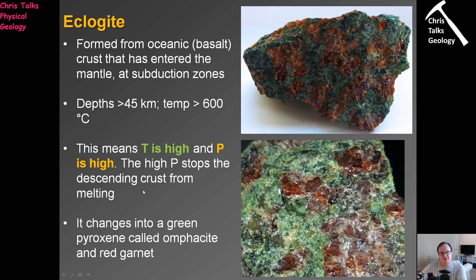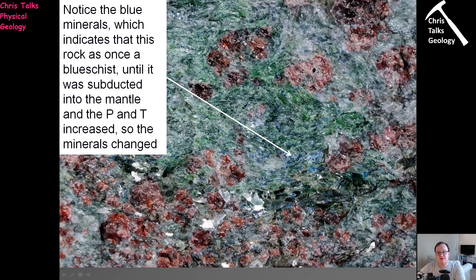The fact that pressure is equal from all directions stops us forming a foliation. So we have the red garnet and the green omphacite. This final picture is a lovely example of an eclogite — you can see the green omphacite and the red garnet, but you can also see lots of small crystals of a blue phase. This is the leftover kyanite, or possibly glaucophane, breaking down to produce the omphacite. You can see the final stages of the blueschist breaking down to form this eclogite, which is quite a nice sample to finish on.